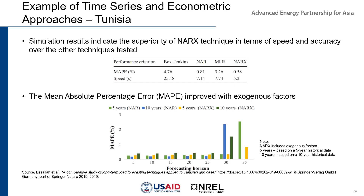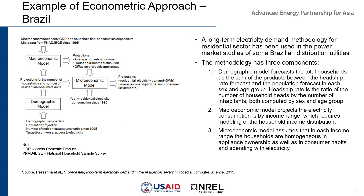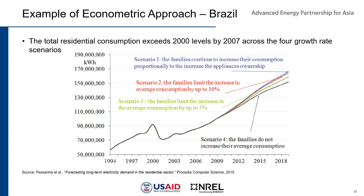The second study is the econometric approach applied in Brazil. The flowchart shows the long-term demand methodology used in some Brazilian distribution utilities, which has three components: demographic, macroeconomic, and microeconomic models. This is an example of the modeling results showing a range of scenario forecasts. In the chart, the total residential consumption exceeds the 2000 level by 2007 across the four growth rate scenarios.